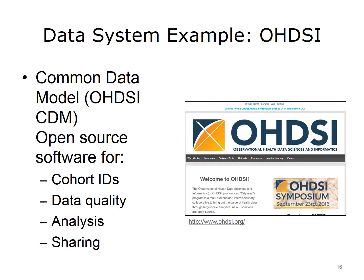An example of the specifications for data and data systems is given by Observational Health Data Sciences and Informatics, or OHDSI, pronounced Odyssey. They define the standard data models that may be used, provide data specifications, and have a whole set of tools to define cohorts for observational studies, look at data quality, facilitate analysis, and help share results.